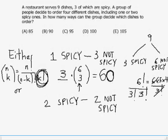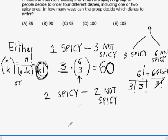Now, what I'm going to ask you to do now is to calculate how many ways this group of people can order two spicy dishes. They have to be different, and two not spicy dishes. So if you think you've got the answer, how many ways this group can order two spicy dishes and two not spicy dishes?